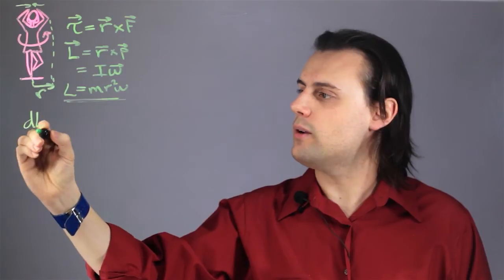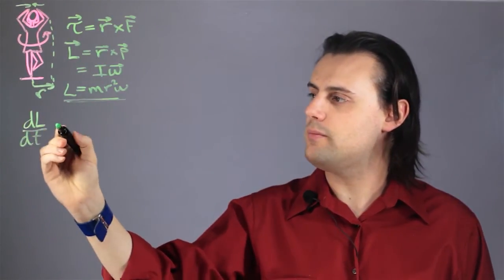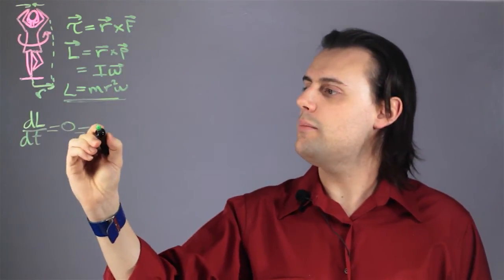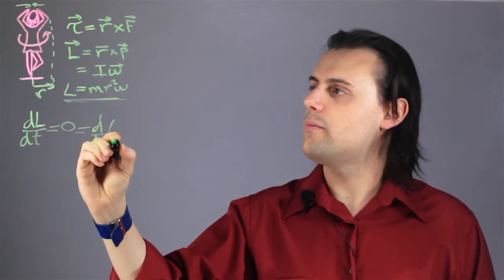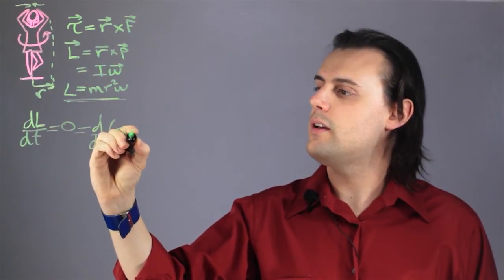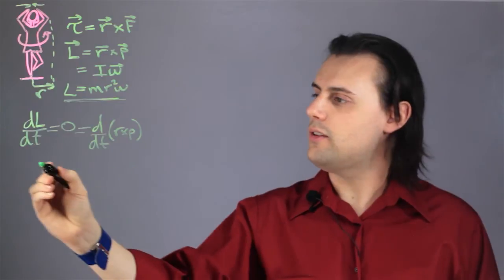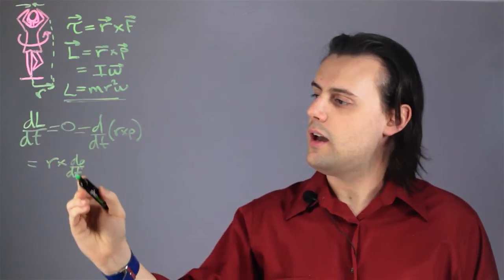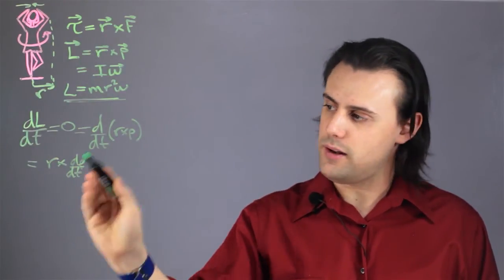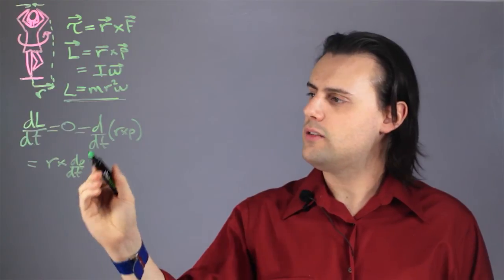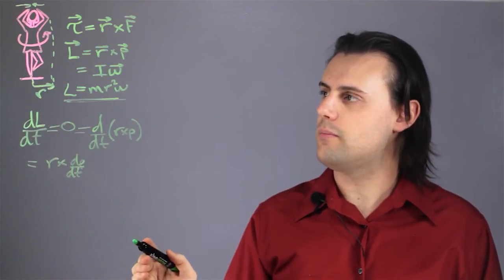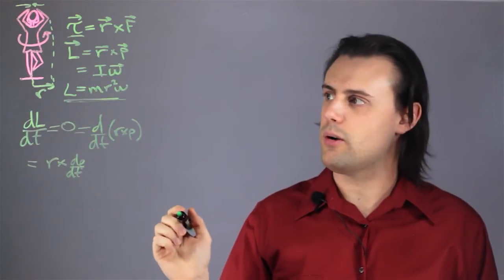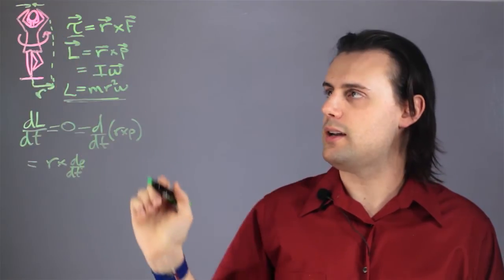We can take the time derivative of our expression for angular momentum, which we know must equal zero. The time derivative of R cross P turns out to be R cross the time derivative of momentum, and the time derivative of momentum equals force. So we see that the time derivative of angular momentum equals the torque — confirming that the torque is zero once she's spinning after pushing off the floor.